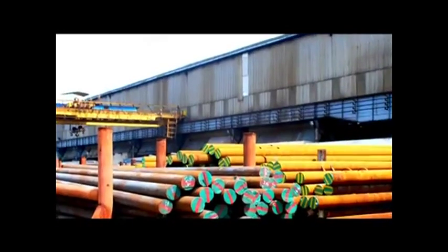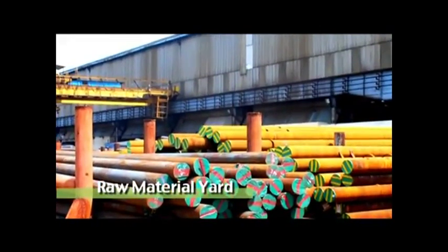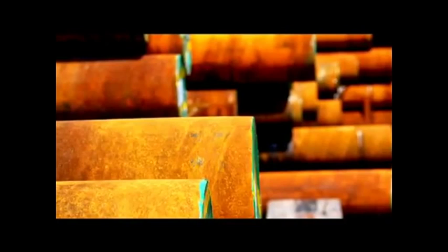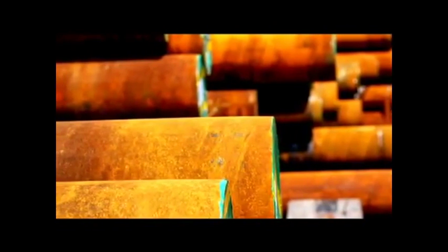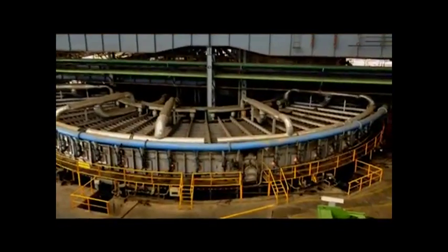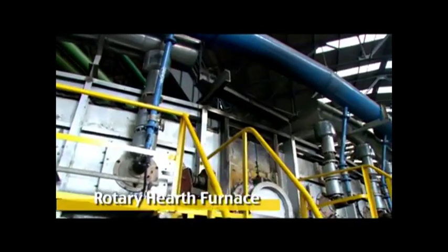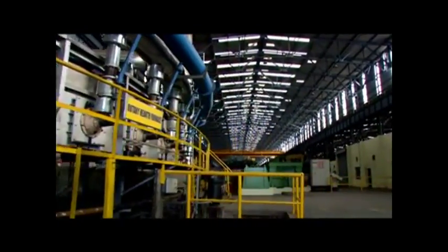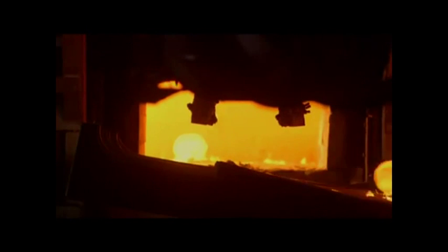Raw material sourced primarily from group companies guarantees timely deliveries and consistent quality with clean steel due to availability of vacuum degassing facilities. Round billets are heated in a rotary hearth furnace with a capacity of 75 metric tons per hour, accommodating billet lengths up to four meters. The furnace provides uniform heating of the billets, resulting in pipe walls with better dimensional tolerances.